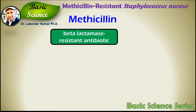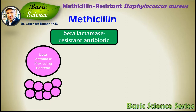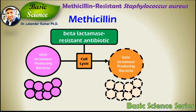Methicillin is actually a beta-lactamase resistant antibiotic. Beta-lactamase is a bacterial enzyme produced by bacteria resistant to other beta-lactam antibiotics, which hydrolyzes the antibiotic rendering it non-functional. Very importantly, methicillin is not bound and hydrolyzed by beta-lactamase, meaning it can kill the bacteria even when this enzyme is present.